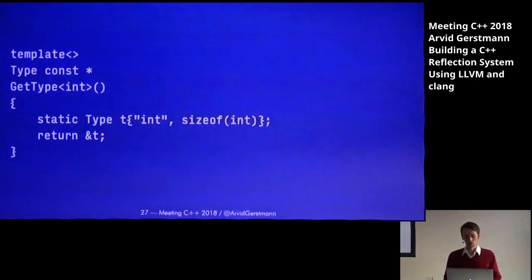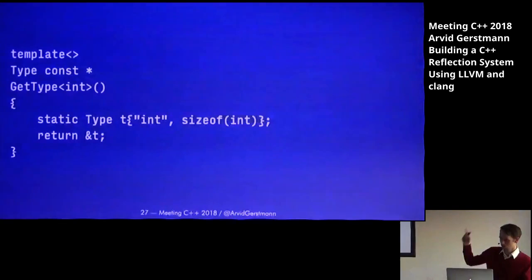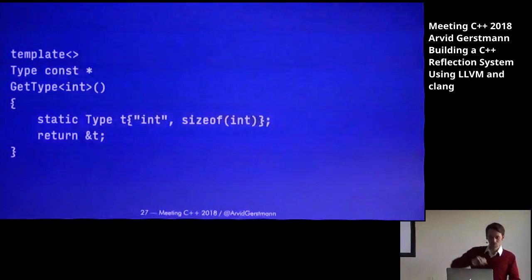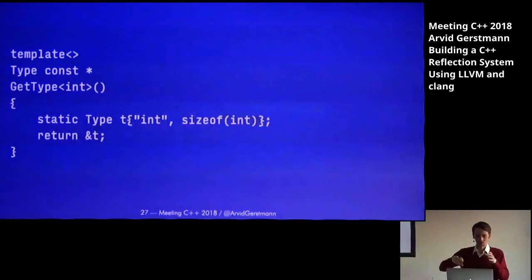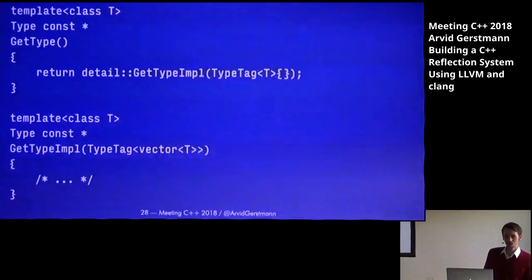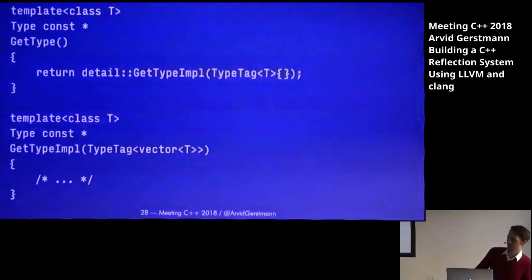So let's implement getType for all our primitive types. Here's a really simple implementation: we create a static type, fill it with our data — which is just "int" and sizeof(int) — and return a pointer to it. This is really, really simple. But unfortunately also slightly more complicated in reality, since we need to represent a template of a template — std::vector of std::string. We can't specialize based on std::vector<T>. So to do that we use tag dispatch, which is a really nice solution. Thanks to Miro for reminding me on Twitter to use that. This way we can specialize based on the class T of our vector and get access to T, and implement getType for std::vector.